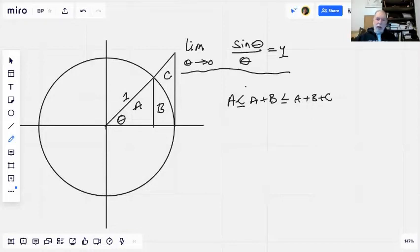and this vertical line here is going to be the sine of theta.